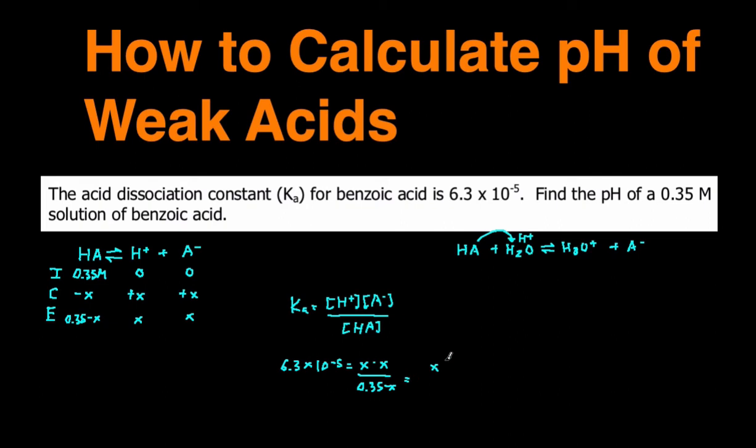When we simplify this, it becomes X squared divided by 0.35 minus X. Now we can solve for X using the quadratic formula, but you can simplify this. Since the K is small, 6.3 times 10 to the negative 5 is a small number, it means this acid doesn't dissociate that much. We can make the assumption that the X value is small enough that we can just cross this out. We're assuming this X is so small compared to the 0.35 that we can just ignore it and pretend it's insignificant. So after we do that, we can then easily solve for X.